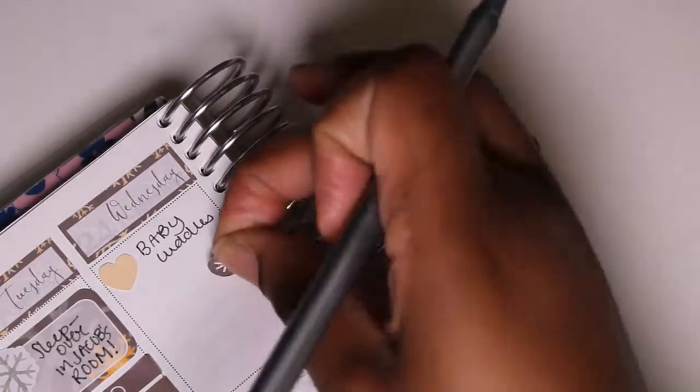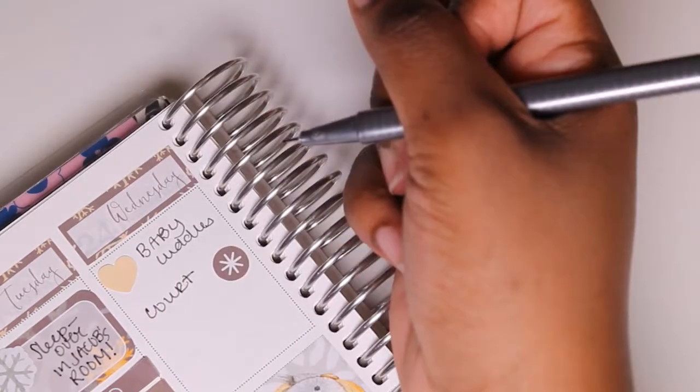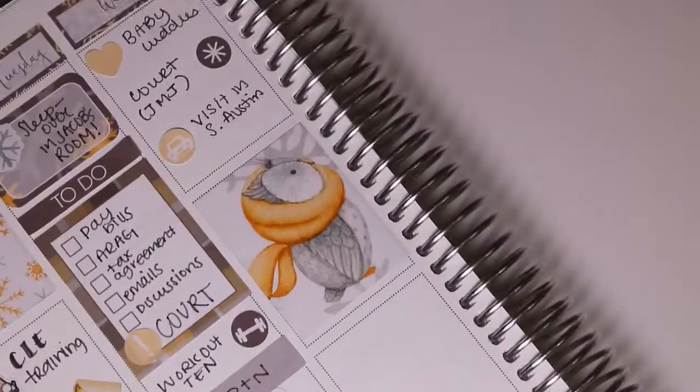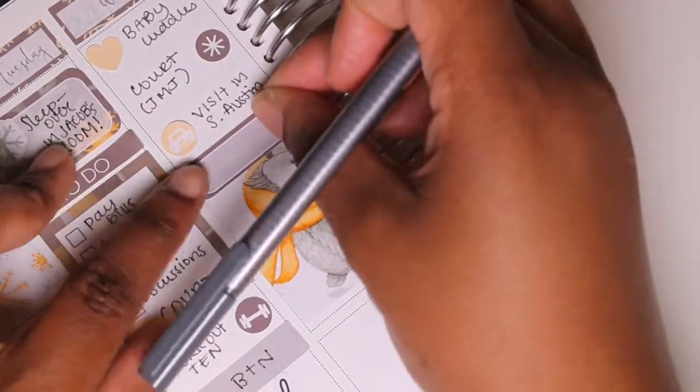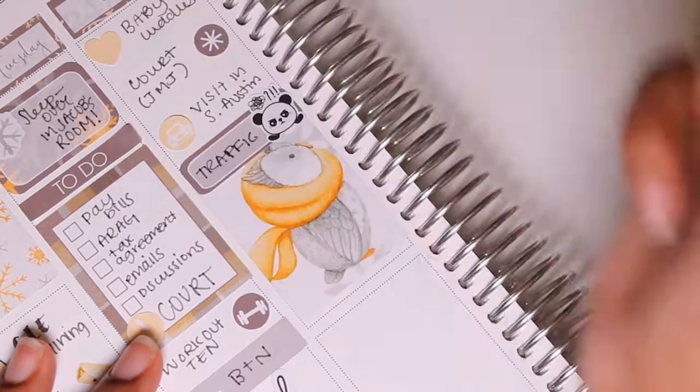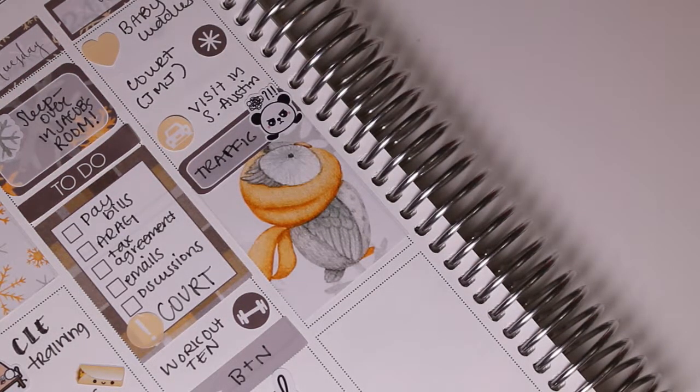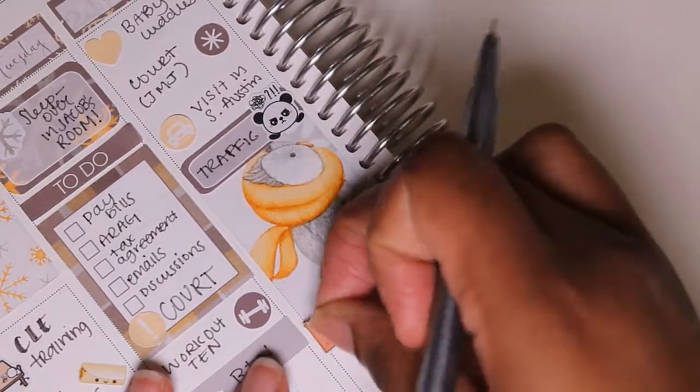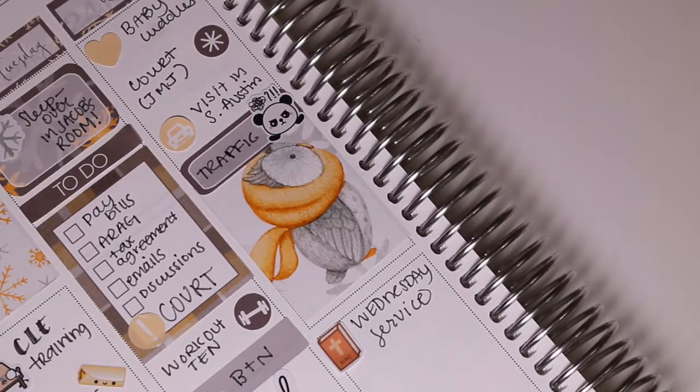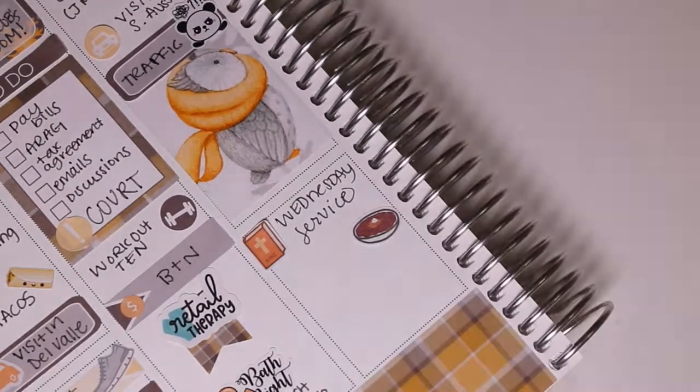Then I moved to Wednesday and I had some baby cuddles in the morning and then I had a court and then I had a visit in South Austin. All those icons were from the kit. Then I put down a quarter box to note that traffic was so bad and I was so annoyed because I was the service producer and I really wanted to be there on time and I was very late because of traffic. That sticker next to Wednesday service is from Kina Prince.